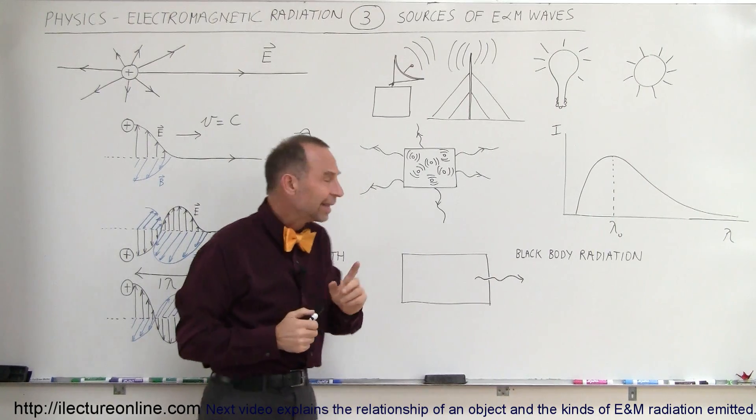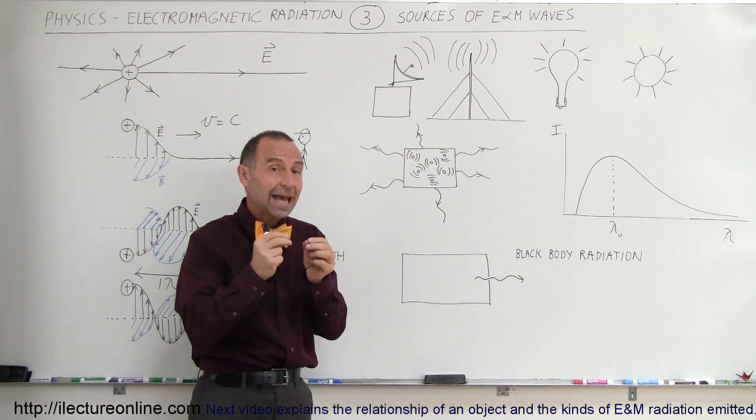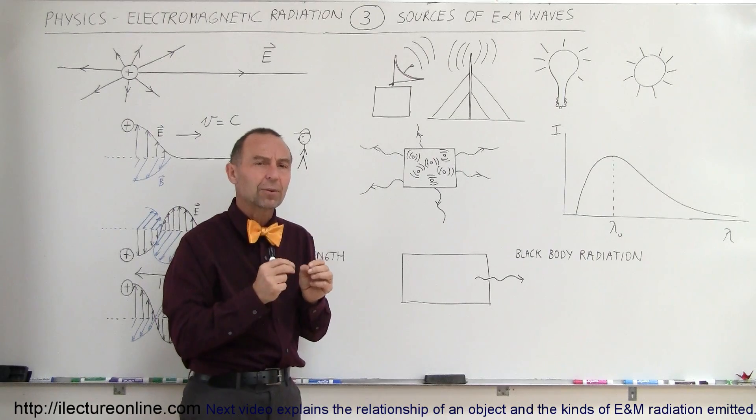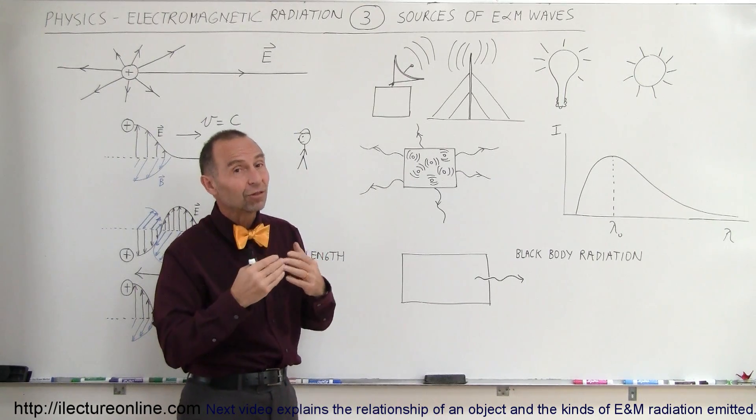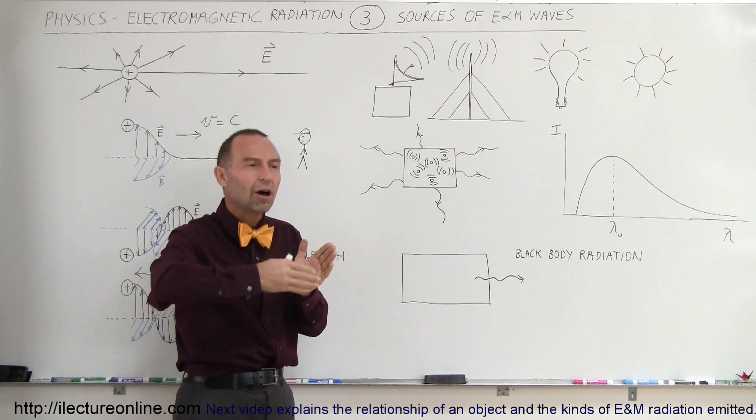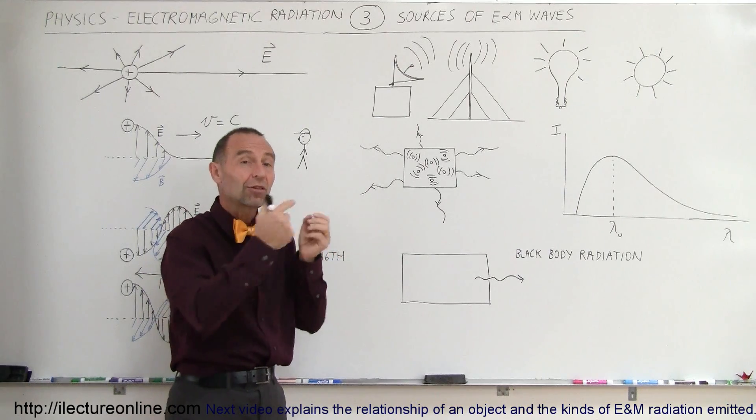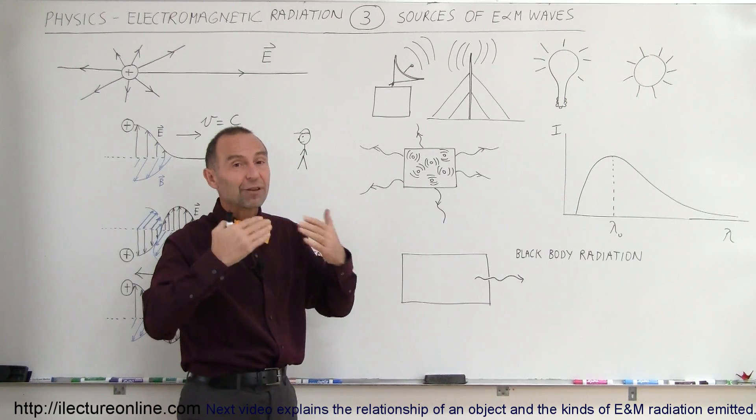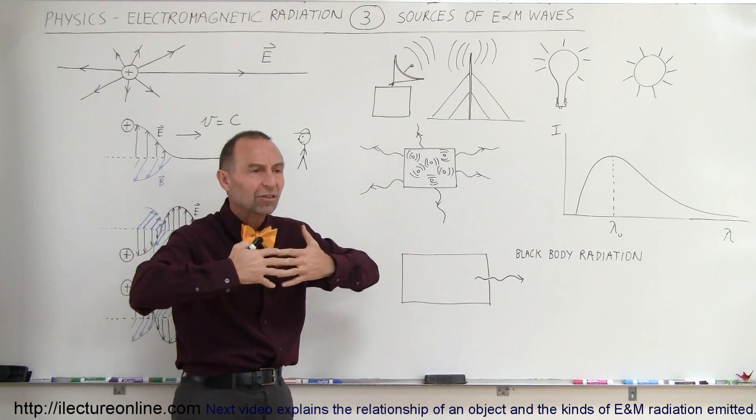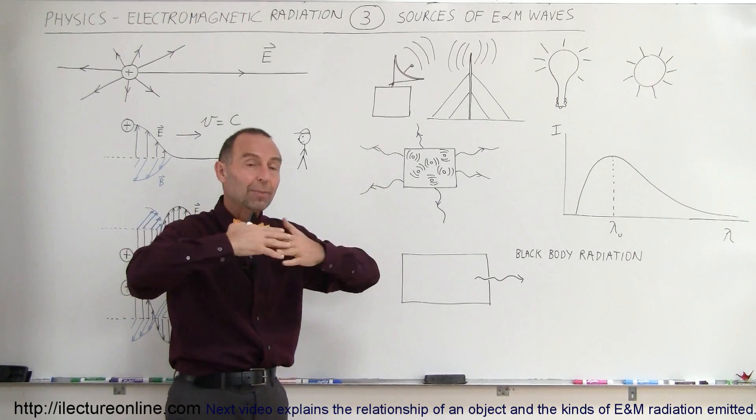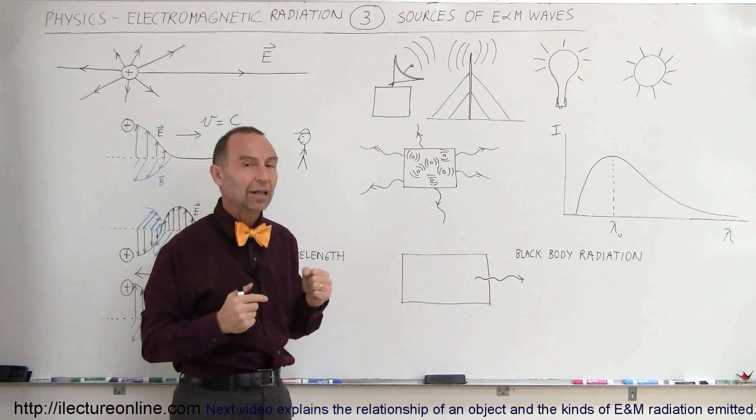Now it turns out that the vibrational frequencies of the atoms are not all at the very same frequency. Some vibrate a little bit faster, some vibrate a little bit slower, so there's a distribution of frequency rates of vibrations of these atoms. Because of that, the frequency and the wavelengths of the radiation emitted from an object is typically over a wide range of values.